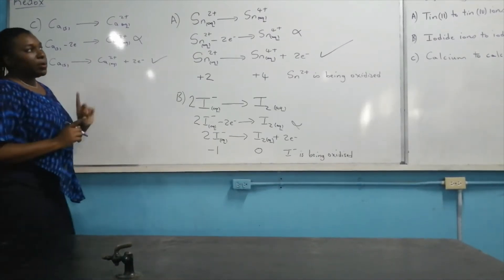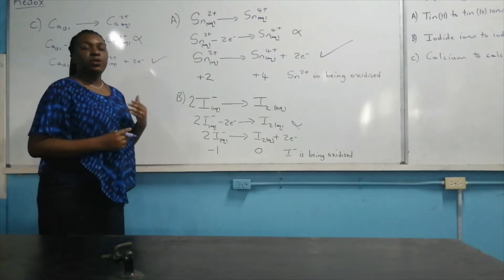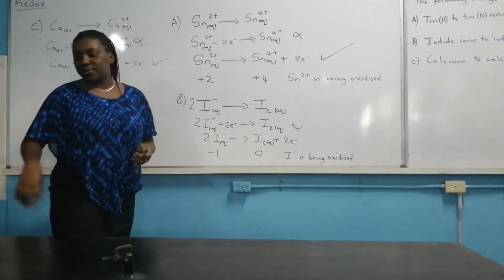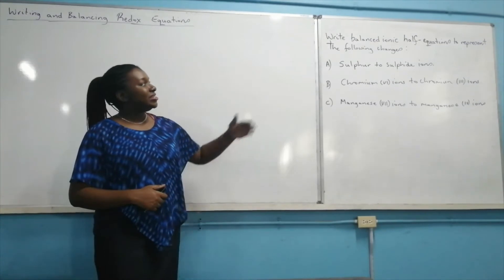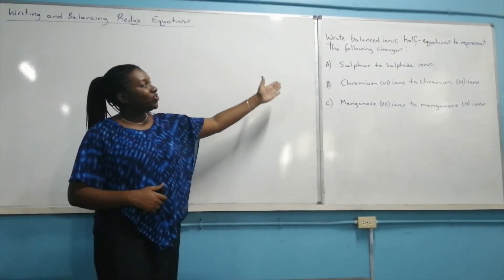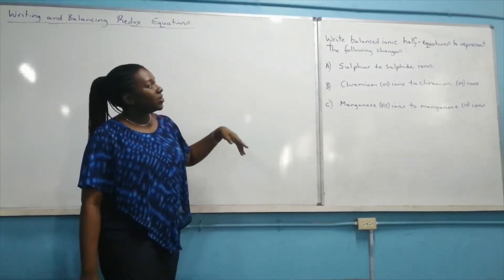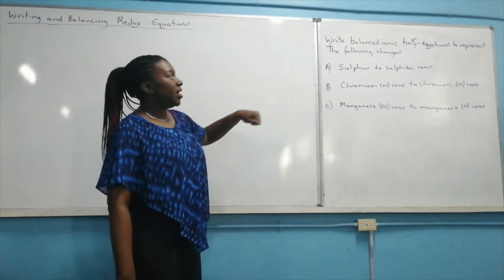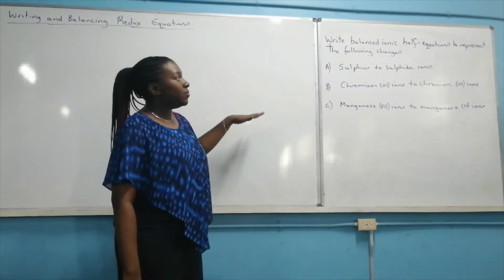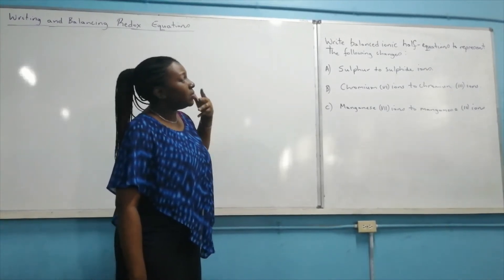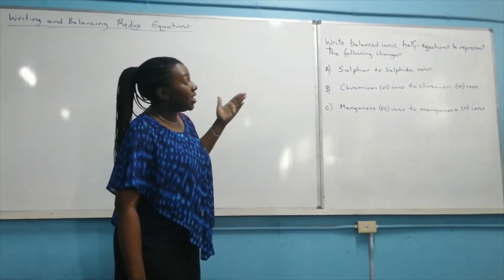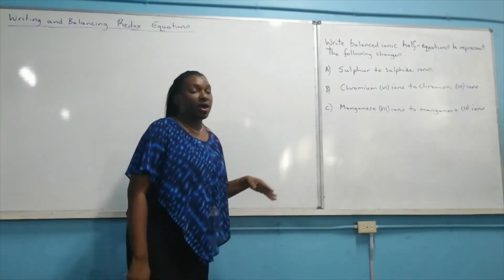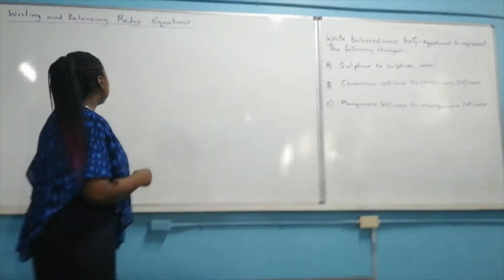Now I'm going to change the question and show you some reduction processes. We're looking at the conversion of sulfur to sulfide ions, chromium 6 ions to chromium 3 ions, and manganese 7 ions to manganese 4 ions. Let us represent those processes.